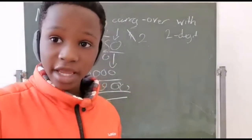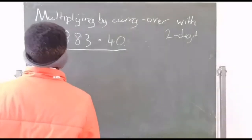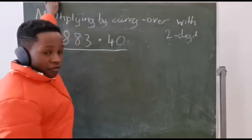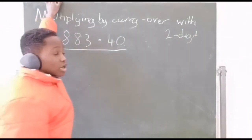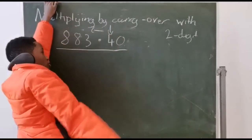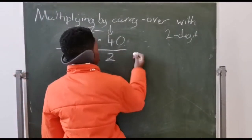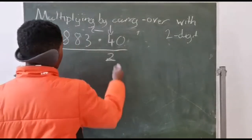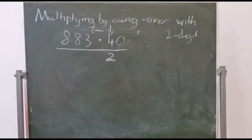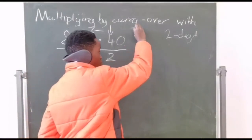Let's do the next calculation. The next one is 883 times 440. We are only taking this number and calculating it. 4 times 3 is equal to 12 — put the 2 here and carry the 1. 4 times 8 is equal to 32, but because I carried the 1 over, I'll add one now.